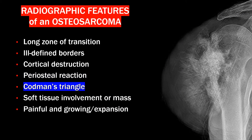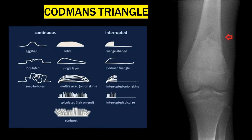A Codman's triangle is a specific periosteal reaction often seen with osteosarcoma. It appears as a triangular area of new subperiosteal bone that forms when the periosteum is lifted away from the cortex by an underlying lesion, and it indicates a more aggressive process seen in malignant tumors or severe infections.